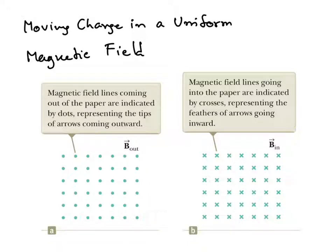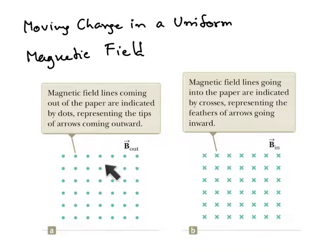Now we will discuss the effect of the magnetic field on the moving charge. First we will discuss the uniform magnetic field. The uniform here means that the magnetic field has the same magnitude everywhere and points to the same direction everywhere. That is the meaning of the uniform magnetic field.